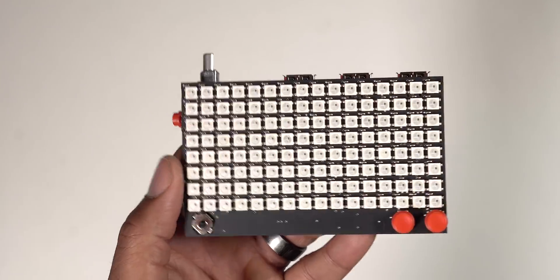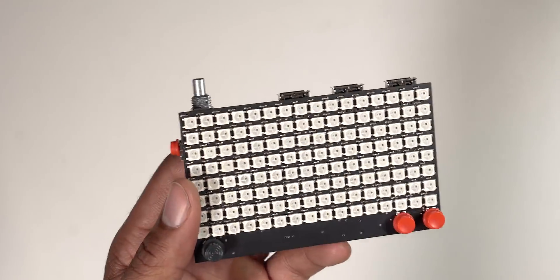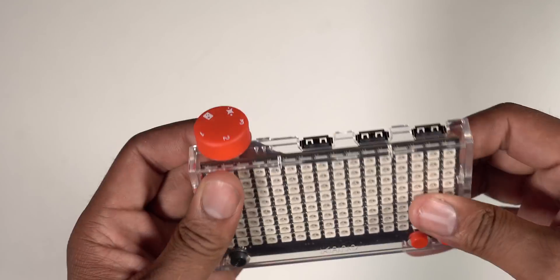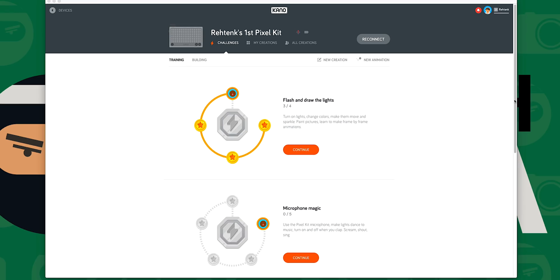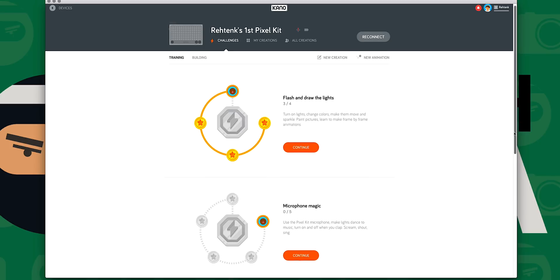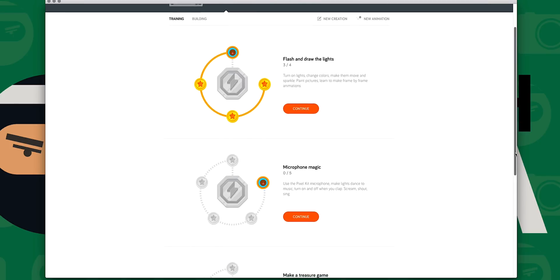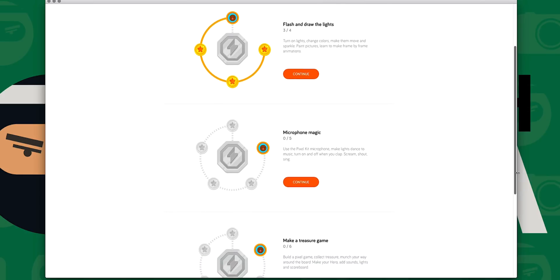Now there's a step-by-step instructional booklet in the box to tell you how to build the kit. And once you've completed it, it's time to let the fun begin. You can choose from over 35 step-by-step challenges that guide you through projects and teach coding concepts. And of course, you can obviously experiment on your own.